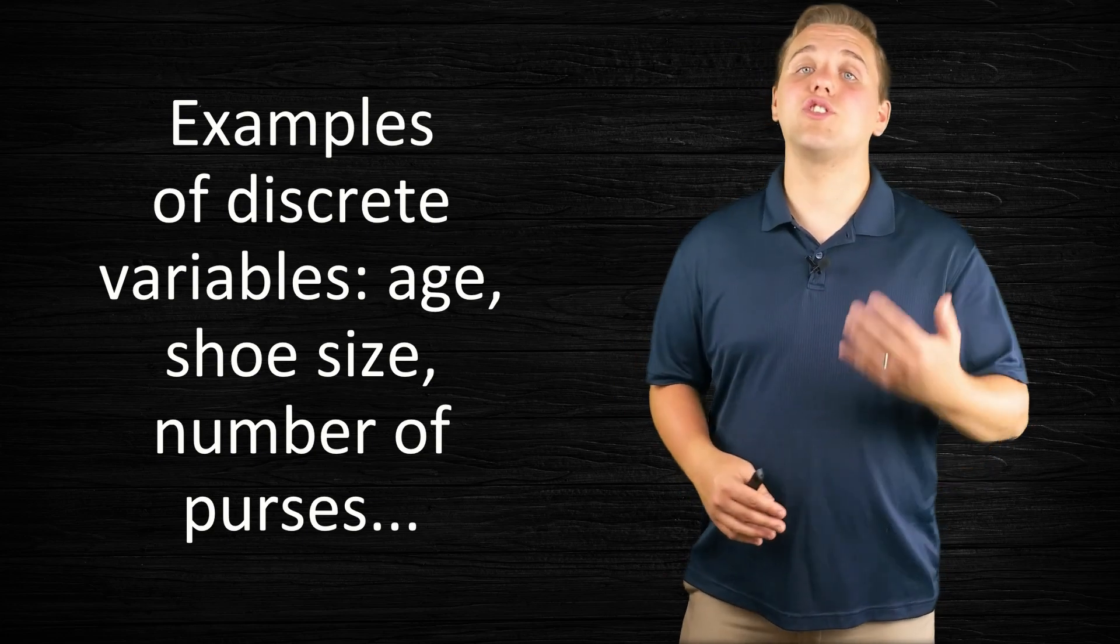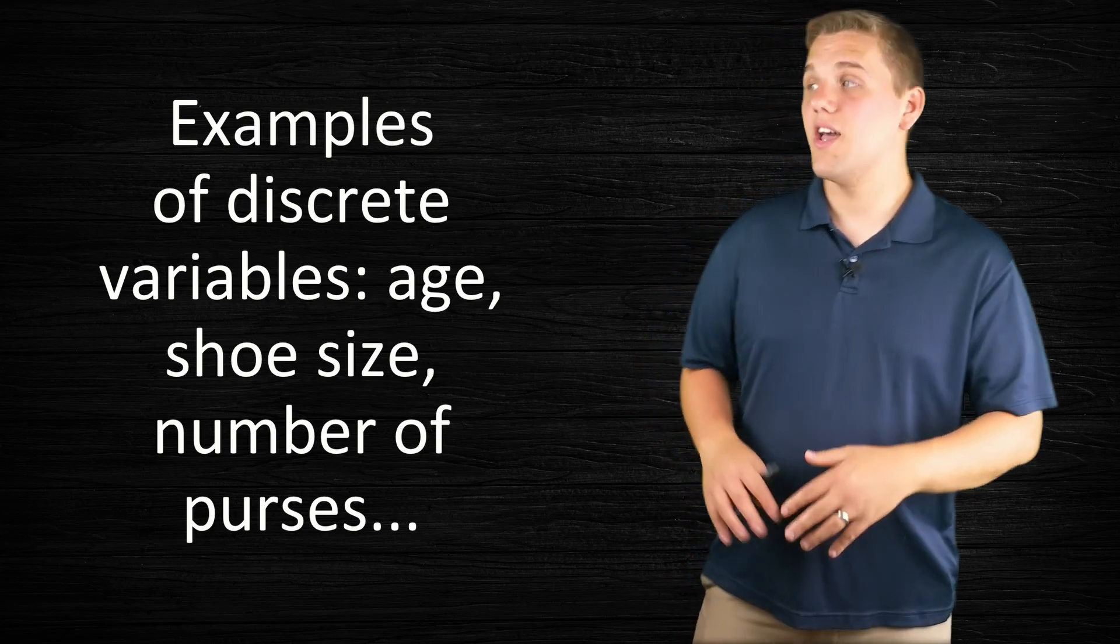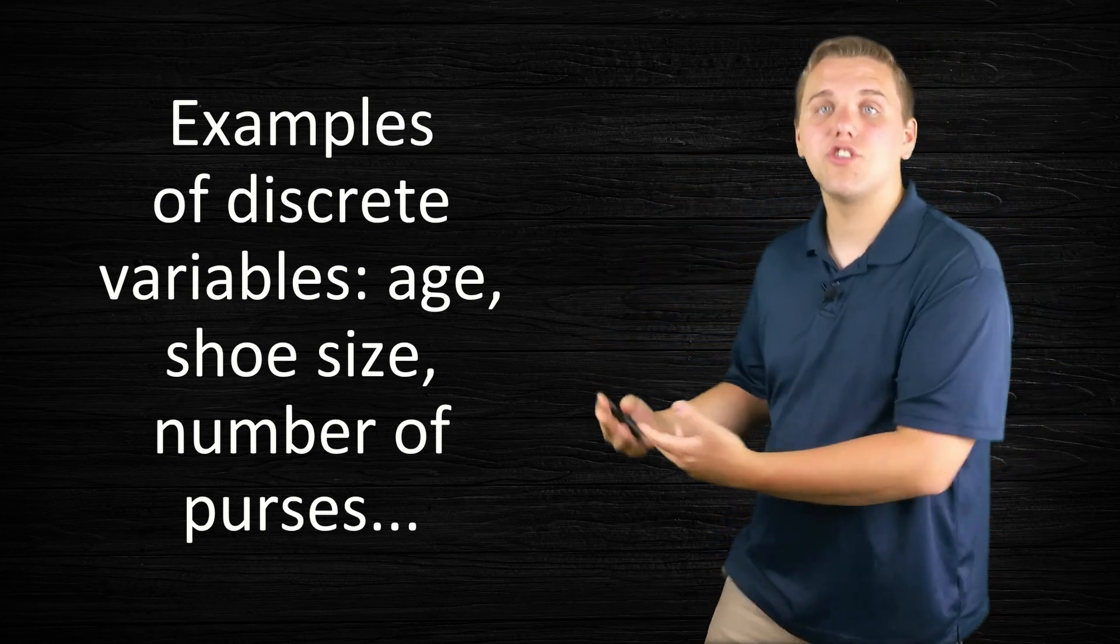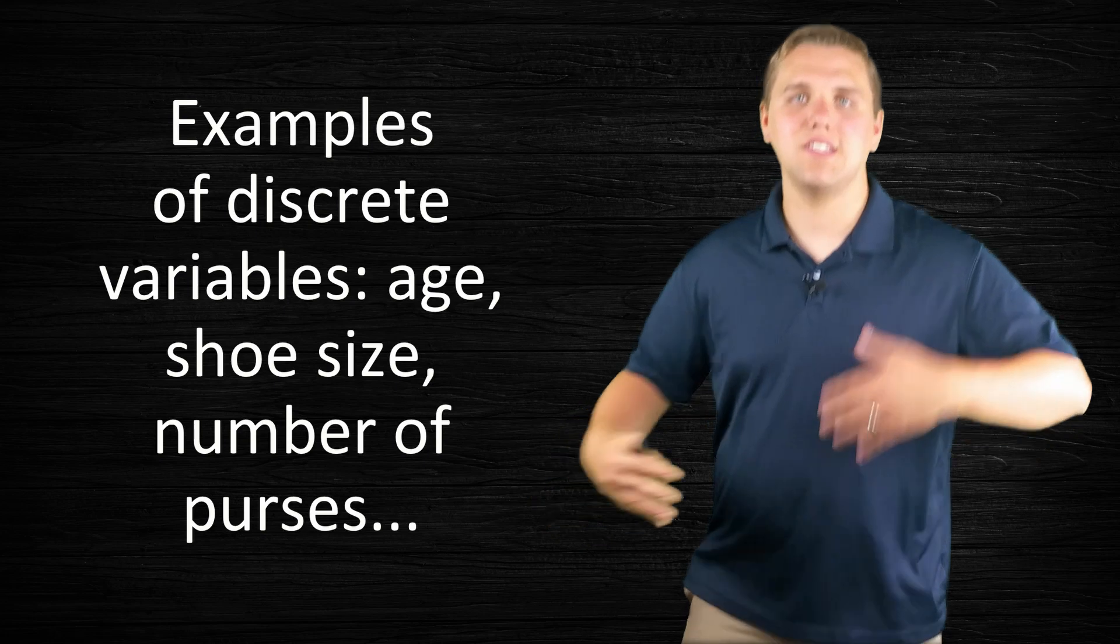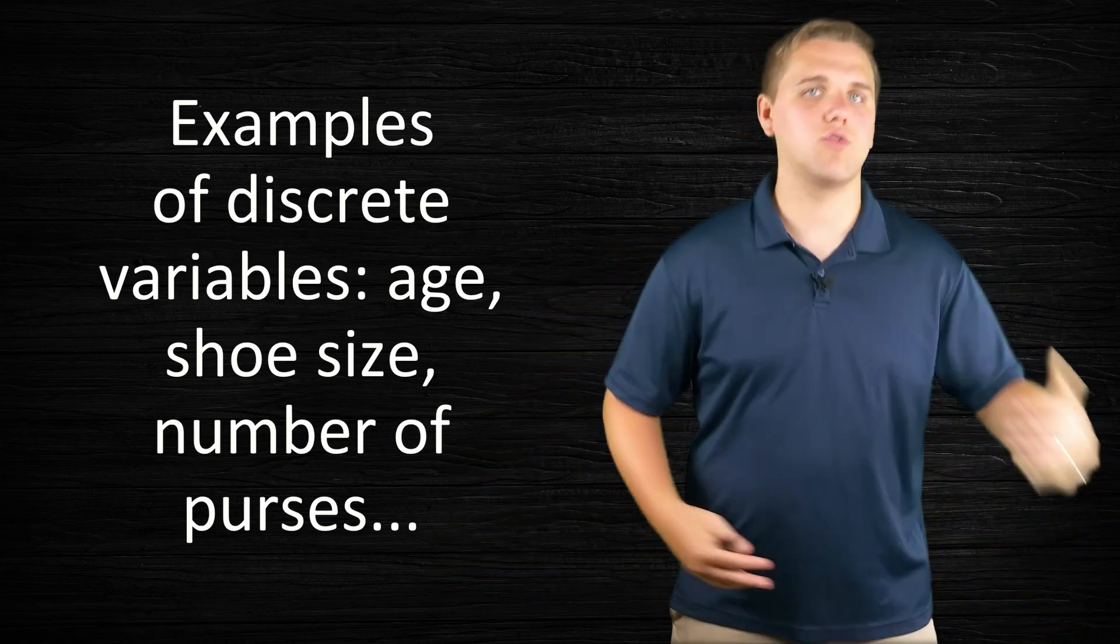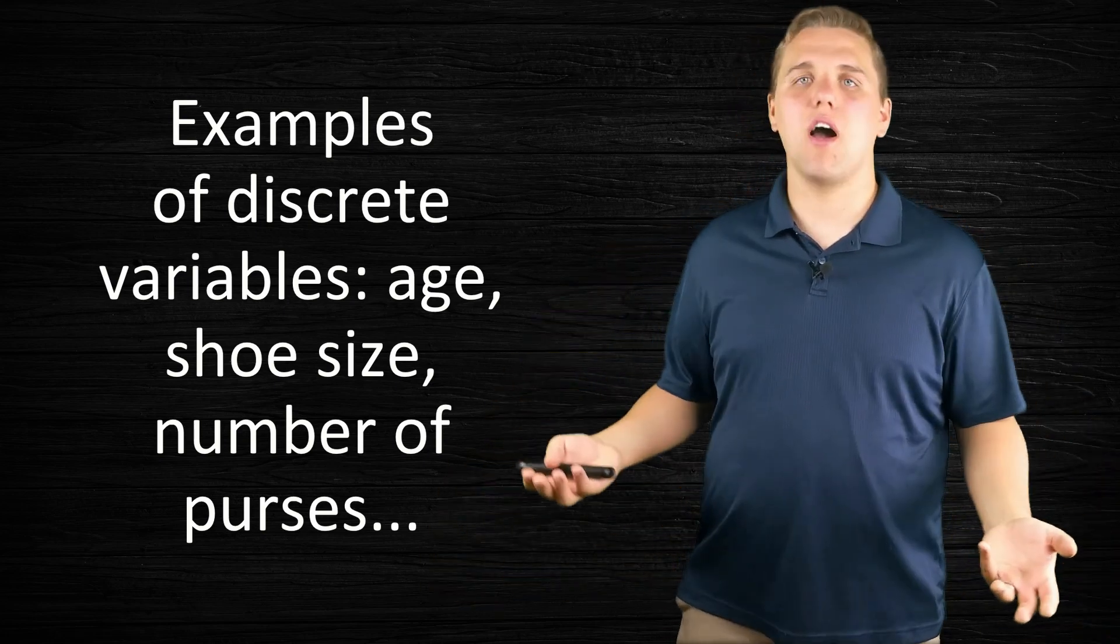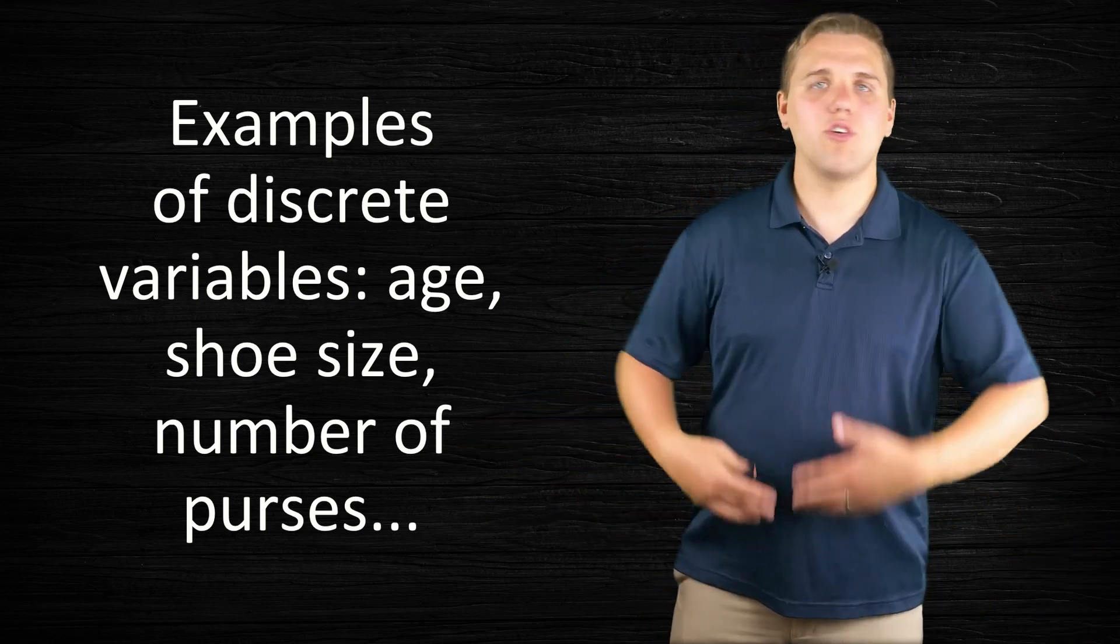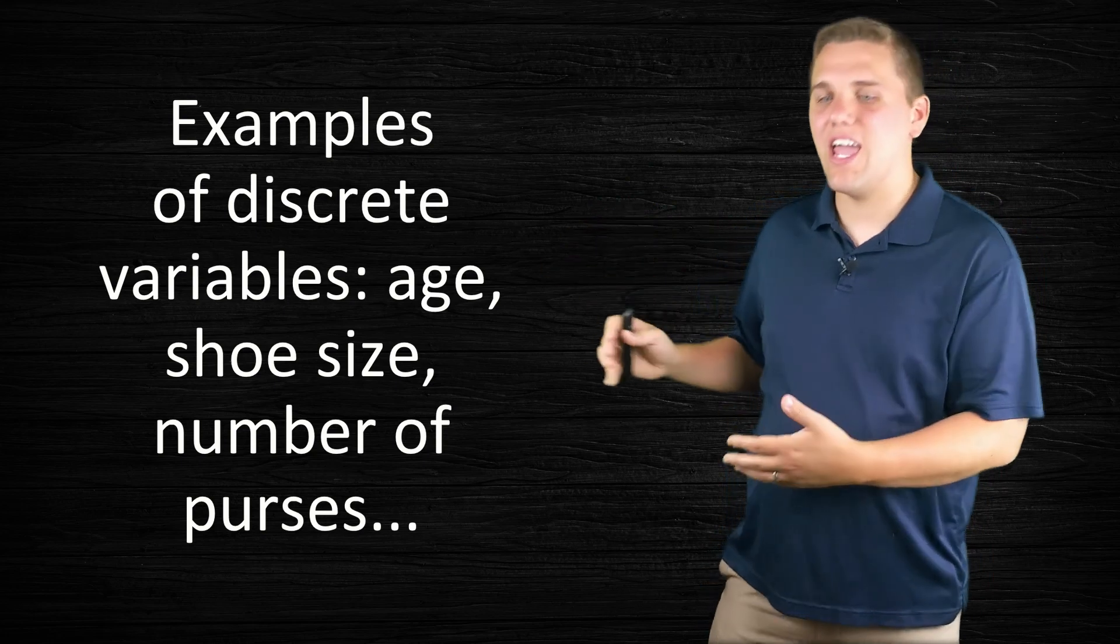Now in the last lecture we found out that there's two types of numerical variables. Here's some examples of the first type which are discrete variables. So we have age. Your age can only be like 18, 19, 20, 21, 22, 23, 24, and I can go up to maybe 130. So there are only a limited number of options that you can have for your age.